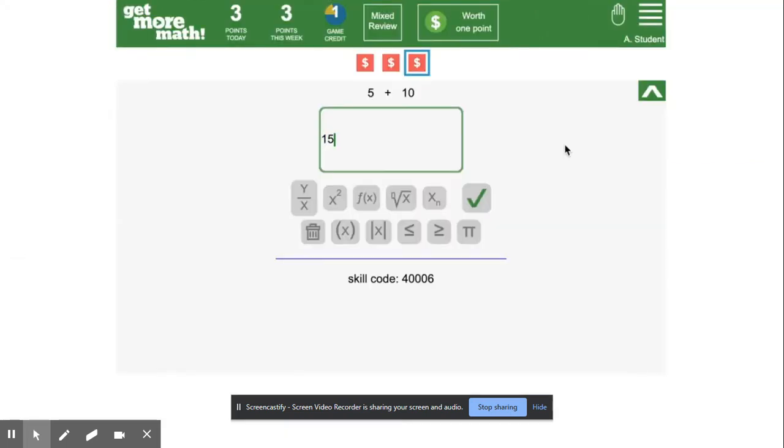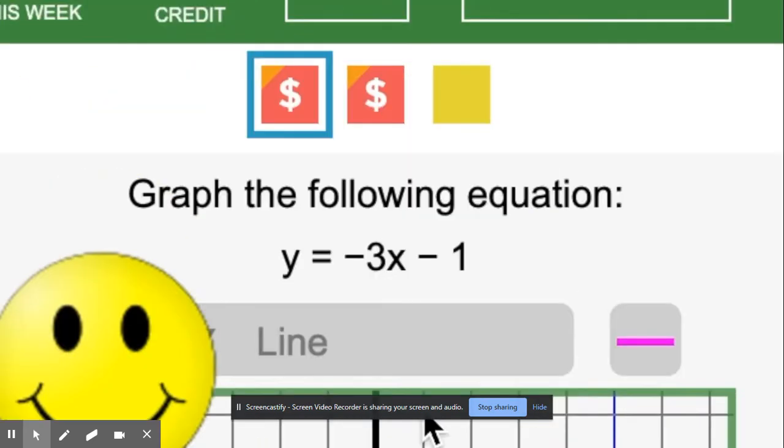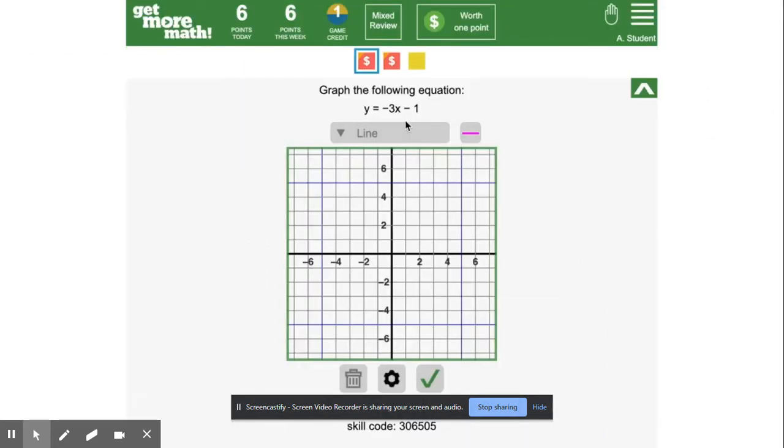Let's do a skill with a dollar sign on it and get it right. You can see that my points went up. After you do a problem and get it right, Get More Math recalculates which skills get to have dollar signs, and it might even move the one that you just did up a skill level. It also selects a new skill for you to work on. If you don't like the problem that Get More Math selects for you, you can choose a different one.